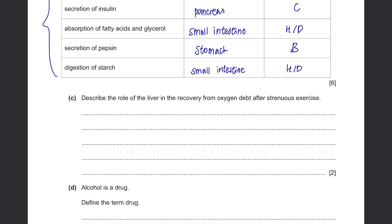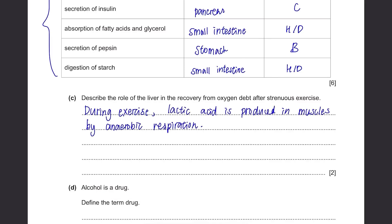Part C: Describe the role of the liver in the recovery from oxygen debt after strenuous exercise. First, state what happens when there is an oxygen debt — lactic acid will be produced in muscles as a product of anaerobic respiration. Then we talk about what the liver does: the liver absorbs lactic acid from the blood. Even though lactic acid is first produced in muscles, it will still be in the blood. After absorbing the lactic acid, the body undergoes aerobic respiration of lactic acid, producing carbon dioxide and water.